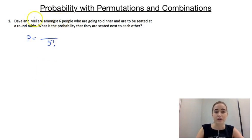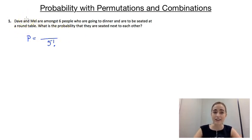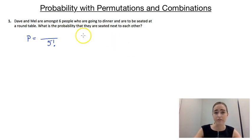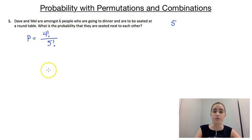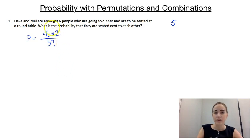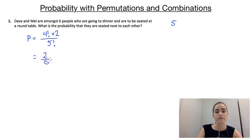Now with six people including Mel and Dave, we want to see how many ways they can be together. We're going to consider Mel and Dave as one item in that group, so we'll have five groups — four individuals and one pair. That gives us four factorial ways they can be arranged in a circle. But for all of those arrangements we could also switch Mel and Dave around, so we multiply by two. That gives us a probability of two over five.